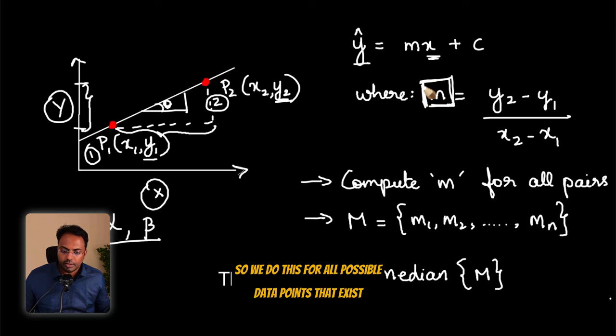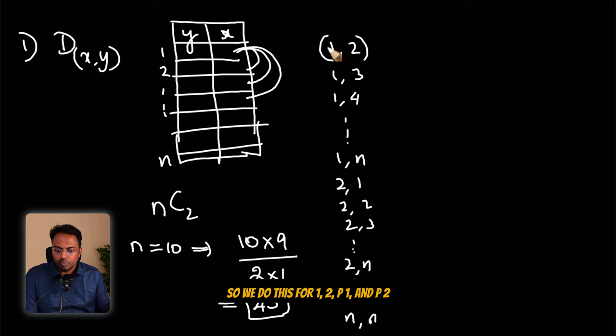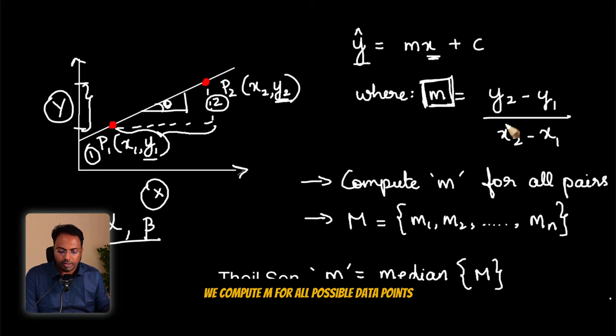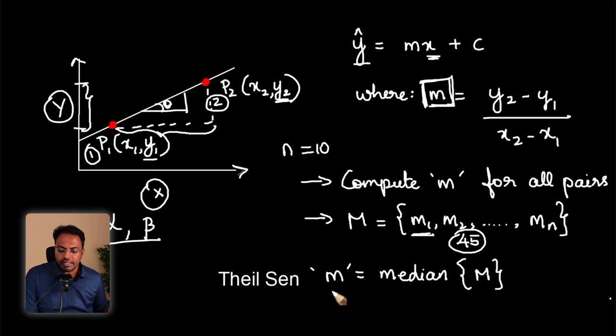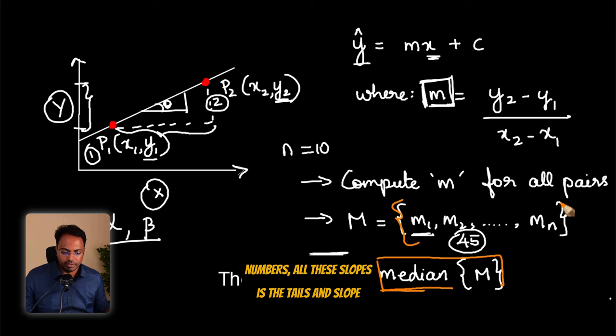So we do this for all possible data points that exist. So we do this for 1,2 p1 and p2, we do this for p1 and p3, likewise we do this computation, we compute m for all possible data points. In this case, if number of records equals 10, there are 45 values of slopes in the output. The Theil-Sen estimate of this m, of the slope, is nothing but the median of all these numbers, all these slopes is the Theil-Sen slope.